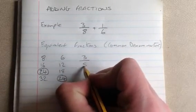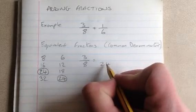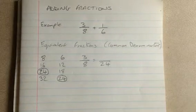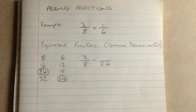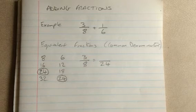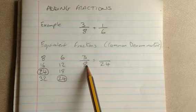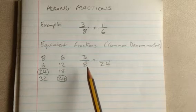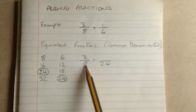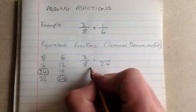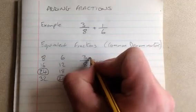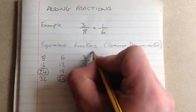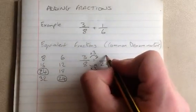Now we need to use equivalent fractions to convert both of those fractions into 24ths. We need to remember that to find equivalent fractions, we do the same thing to the top and the bottom of the fraction. So we've got 3 eighths — we convert it into 24ths. What have we done to 8 to get 24? We multiply by 3, because there are 3 eighths in 24. So that's times by 3, and if the bottom has been multiplied by 3, we do the same to the top — 3 times 3 is 9.